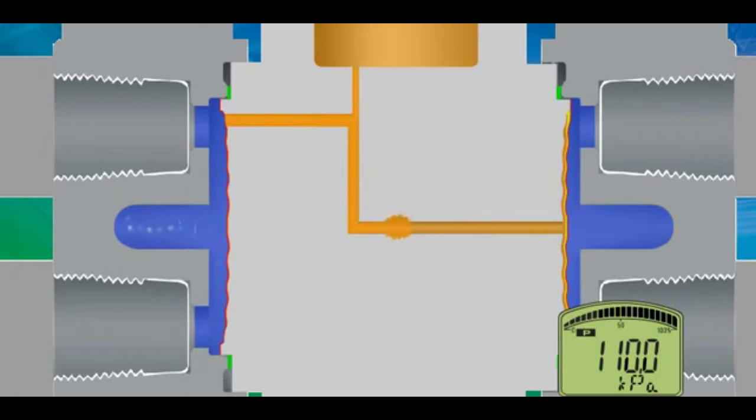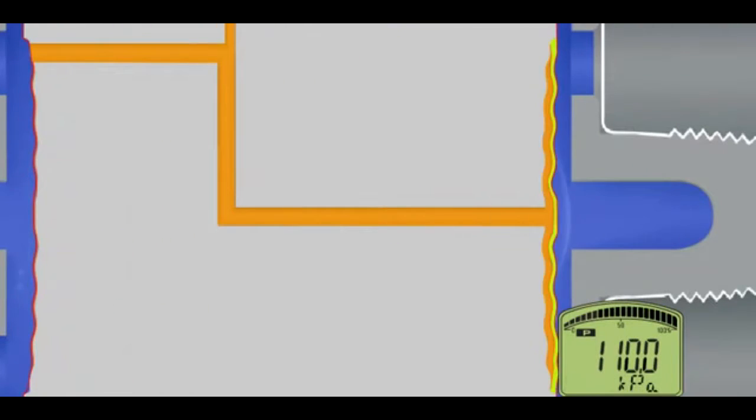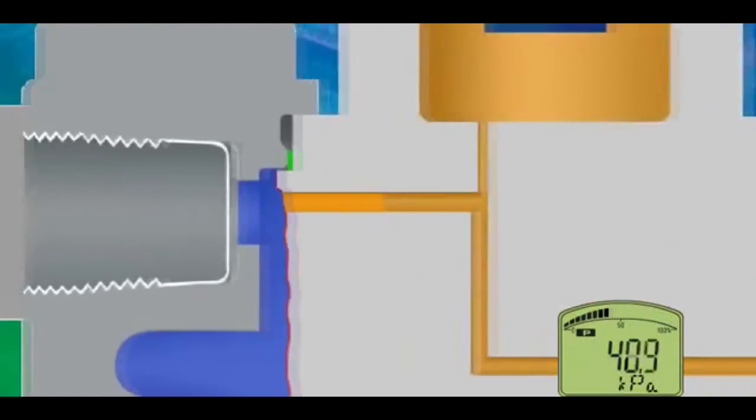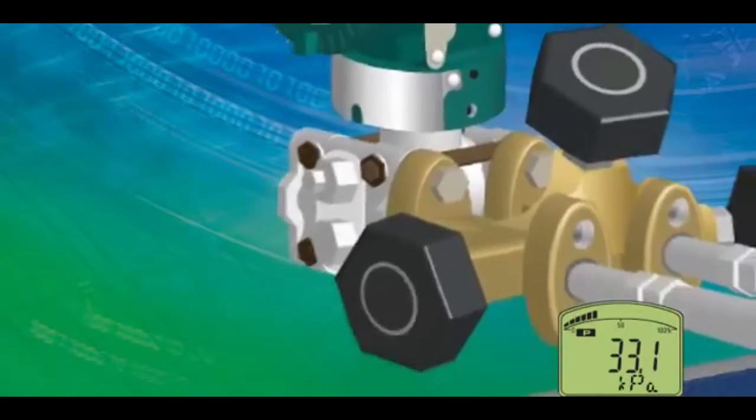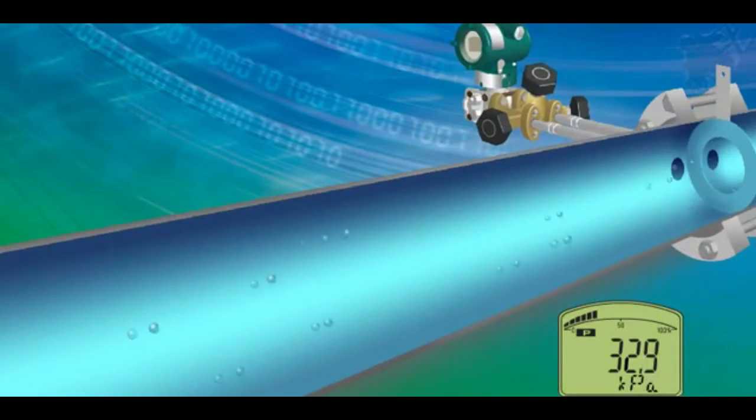Our unique capsule design equalizes overpressure within the capsule before it can reach the measurement sensor. Therefore, Yokogawa's pressure transmitters prevent failure and minimize any performance impact from overpressure events.